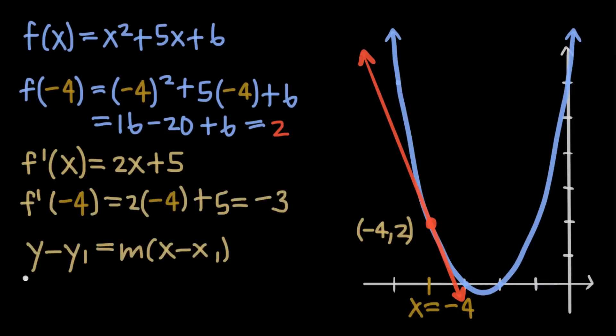Now we can use all this information to plug into the point-slope formula, which will give us the equation of the tangent line. And so for the equation of the tangent line, we're going to get y minus 2 is equal to negative 3 times quantity x plus 4.